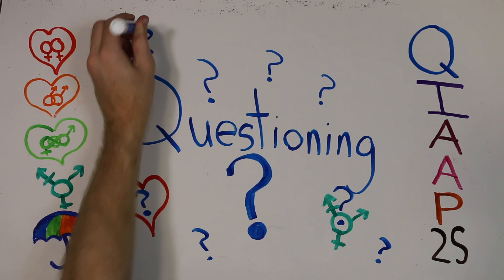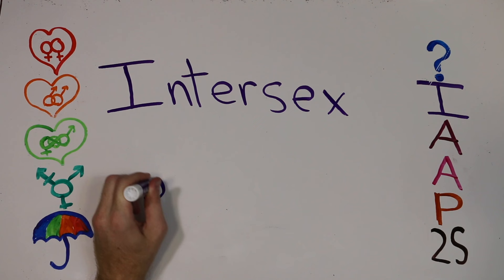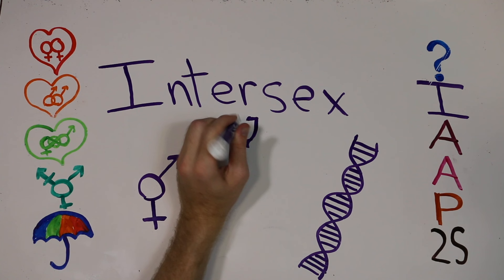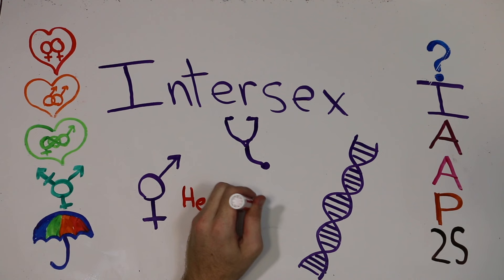I stands for intersex. Intersex people are born with or develop genitals with ambiguous sexual characteristics because of chromosomal or hormonal abnormalities. Doctors will often choose a gender for intersex babies and assign that gender through surgery soon after birth. It should also be noted that the outdated term hermaphrodite is considered offensive and should not be used to describe these types of people.